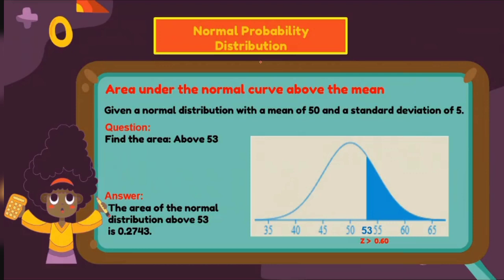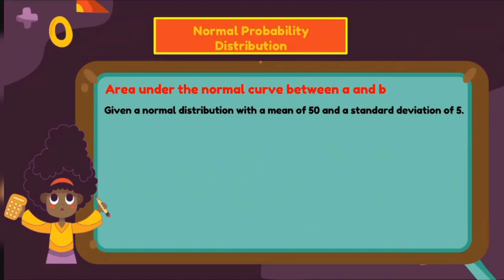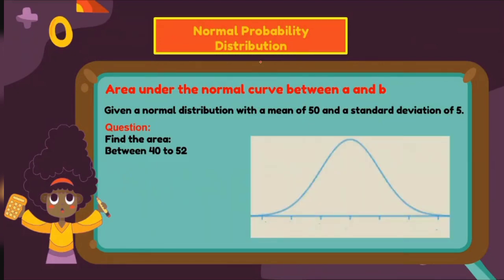That is the approach for getting the area to the right of the z-score. For the third condition: same distribution, mean of 50 and standard deviation of 5. Find the area between 40 and 52. Construct the normal curve with values 35, 40, 45, 50, 55, 60, and 65. Since we need the area between 40 and 52, locate 40 and 52 — which falls between 50 and 55 on the illustration.